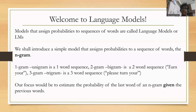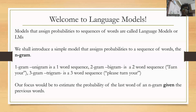You have what is called a one-gram or unigram — a one-word sequence; a two-gram or bigram — a two-word sequence; a three-gram or trigram — a three-word sequence, and so on. Our focus would be to estimate the probability of the last word of an n-gram given the previous words. We'll talk of bigrams — it's easier to understand.